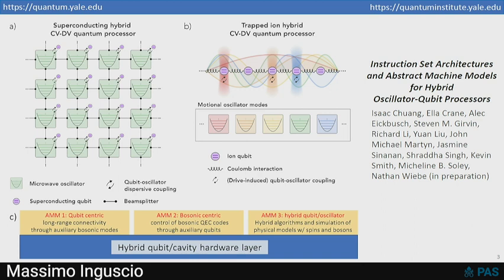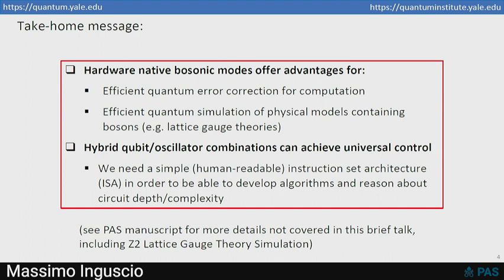So in this brief talk, I don't have time to cover all of the things that are in this paper in preparation. That's over 125 pages long. I've got to somehow stop it from growing so I can get it submitted. But I'm going to just illustrate for you some very simple concepts about control of this system. And the message, which I don't have time to go into detail, is that hybrid architectures that contain both bosonic modes and qubits have a number of advantages for quantum error correction.